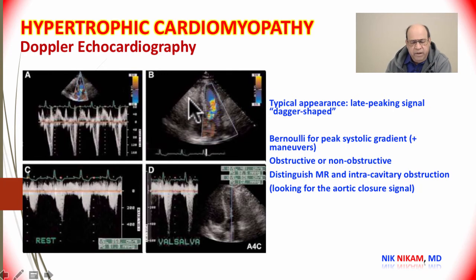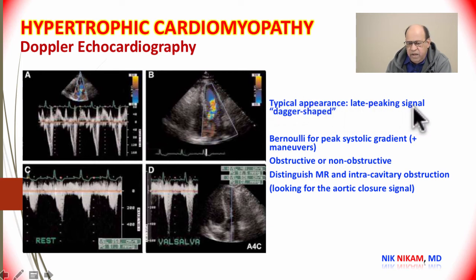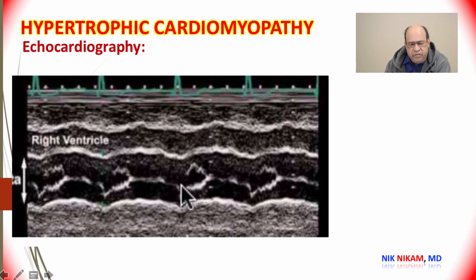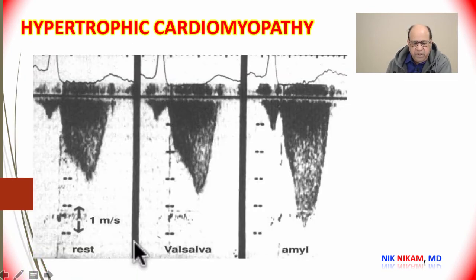One characteristic finding in hypertrophic cardiomyopathy is an aortic pulse waveform on Doppler with a dagger-shaped appearance characterized by late peaking of the signal. Doppler findings may also reveal significant mitral regurgitation. Another interesting finding is early aortic valve closure — a notch that opens again and then closes — very similar to the bifid carotid pulse that we palpate.